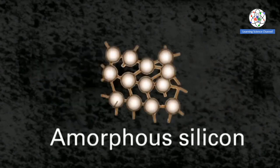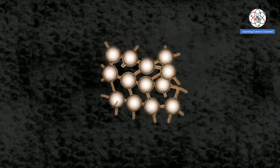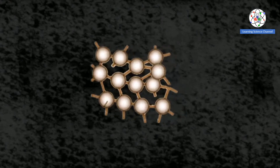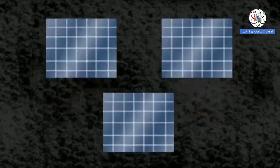Amorphous silicon is non-crystalline silicon. In this structure, the silicon atoms are not held together tightly like in crystalline silicon.